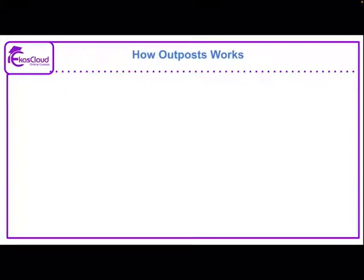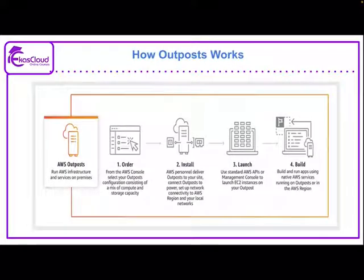How Outpost works — there are four steps. Outpost is essentially running AWS infrastructure and services on-premises. The four steps are: first, order the Outpost; second, install it on-premises; third, launch everything with the help of the management console or APIs; fourth, build and run apps using native AWS services running on Outpost or in the AWS region.